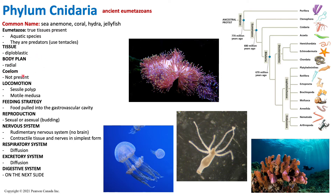Cnidarians also have radial symmetry. Remember there is either radial or bilateral — cnidarians are radial and diploblastic. Similar to Porifera, cnidarians do not have a coelom; they do not have that inner cavity. For locomotion, there are two different types of cnidarians: either a polyp or a medusa. If the cnidarian is a polyp, it will be sessile and not able to move. If it is a medusa, it will be motile and able to move.